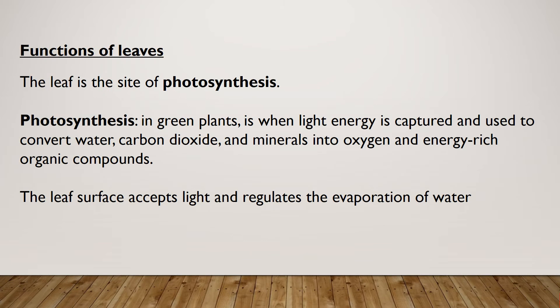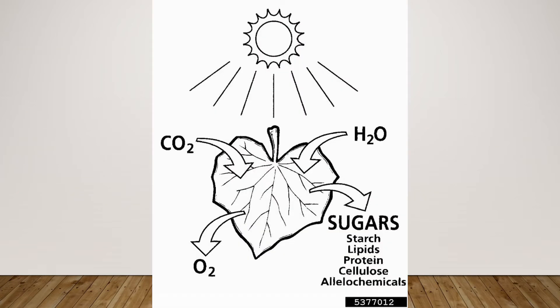The leaf is the site of photosynthesis. Photosynthesis in green plants is when light energy is captured and used to convert water, carbon dioxide, and minerals into oxygen and energy-rich organic compounds. The leaf surface accepts light and regulates the evaporation of water. Here is an illustration of photosynthesis on a leaf: carbon dioxide and water go in, oxygen and sugars come out.